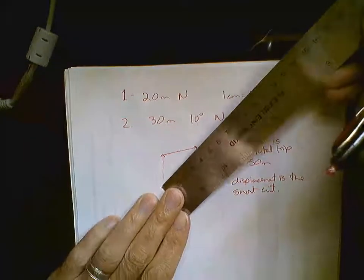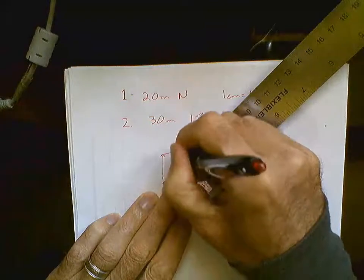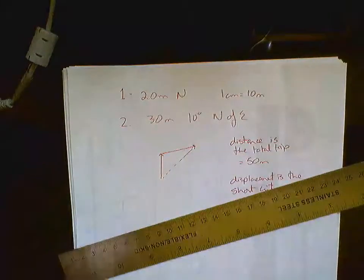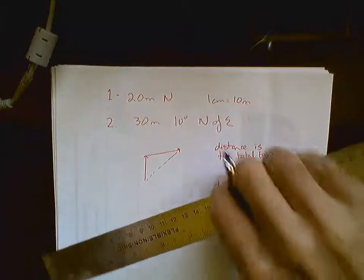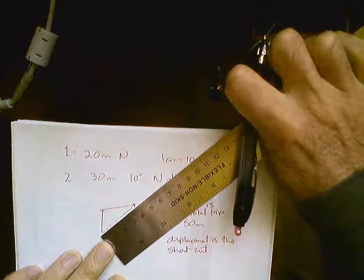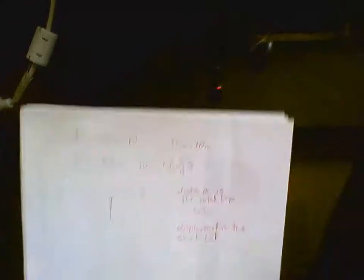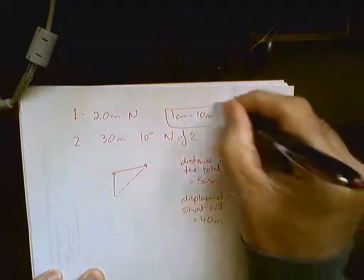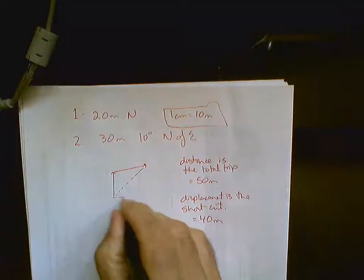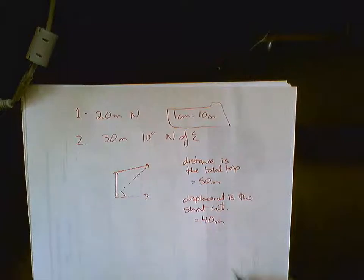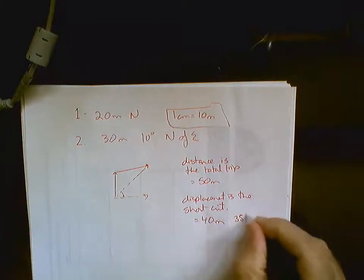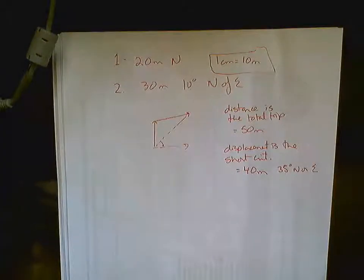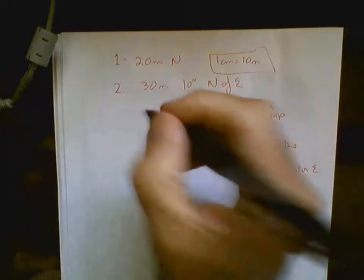So, you should be able to draw in the shortcut. And because this is to scale, you should be able to measure this. So, this is 4 centimeters. So, that's 40 meters because we have 1 centimeter equals 10 meters. And we should be able to take this angle right here. And let's say that's 35 degrees north of east. This is the easiest way to use vectors. This is additive vectors.